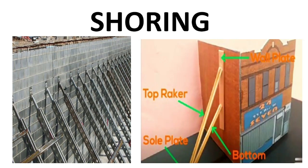Shoring is the method of providing temporary support to an unsafe structure. For example, if you have a wall that is weak, you provide temporary inclined support — that is called shoring. The temporary support provided to an unsafe structure is the key concept here.